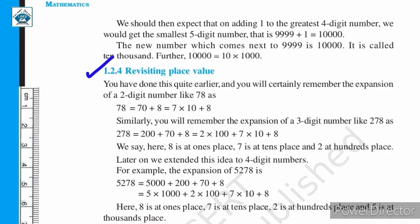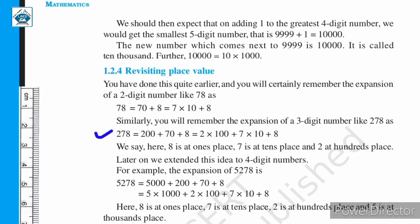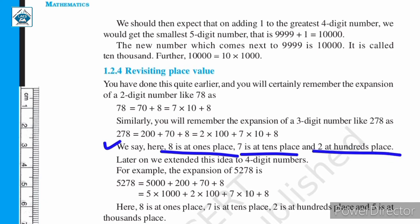The next topic we will be discussing is revisiting place value. You have already learned about place value. Consider the number 78 — it is a two-digit number and it can be written as 70 + 8, which is 7 × 10 + 8 × 1. The number 278 can also be expanded and written as 2 × 100 + 7 × 10 + 8. We can say here 8 is in the 1s place, 7 is in the 10s place and 2 is in the 100s place.